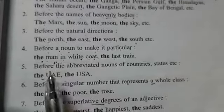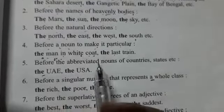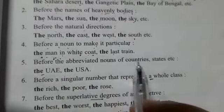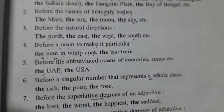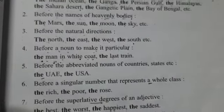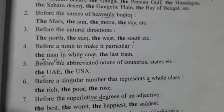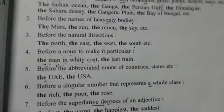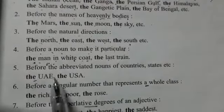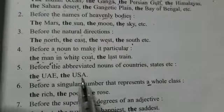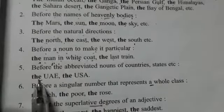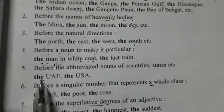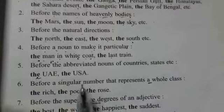Next is before the abbreviated names of countries. Jo countries ke jo names hain, jo abbreviated hotte hain. For example, UAE, USA — United States of America. We will use 'the' before them.